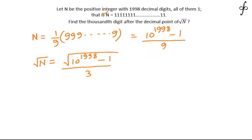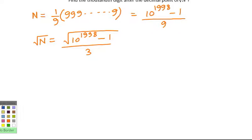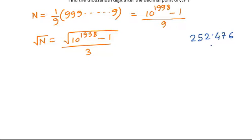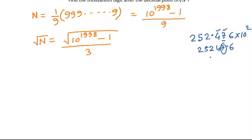We are looking for the thousandth digit after the decimal point of √N. Parallelly, let us take an example: consider the number 252.476. If you are looking for the digit after two decimal places — that is the second place — and you multiply this number by 10², you get 25247.6. That digit 7, which was two places after the decimal, is now the units digit.